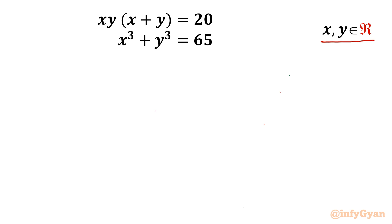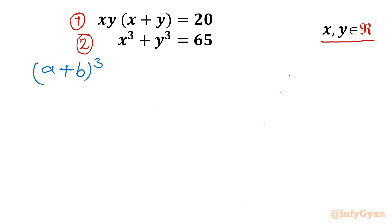Let's get started by writing equation number 1 and equation number 2. Now I will use one algebraic identity: (a + b)³ = a³ + b³ + 3ab(a + b).